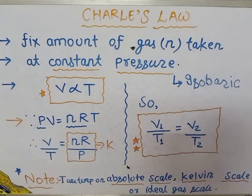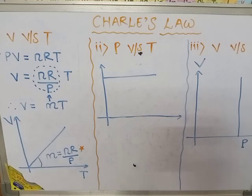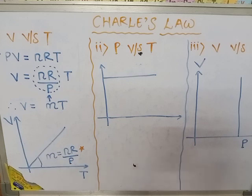Now we will move on to the graph of Charles law. The first graph is volume versus temperature. We know PV = nRT, so rearranging: V = (nR/P) × T. For a V versus T graph, let M = nR/P, so V = MT. This is of the form Y = MX, which is a straight line. Therefore we get a straight line graph between volume and temperature.